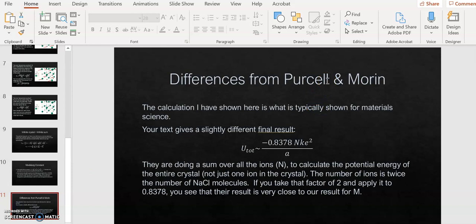Your textbook Purcell and Morin also does a derivation very similar to this, but the equation that they get is slightly different. The reason they get a slightly different equation is because they're not just calculating the potential energy for one ion. They're trying to calculate the potential energy for the entire lattice of ions, which is going to be a much different number. What they show in the text is that the total potential energy is minus 0.8378 times NKE squared over A. Here N would be the total number of ions in the lattice, so you can see that that's different. If you think about it, the total number of ions is twice the number of sodium chloride molecules. So if you take that factor of 2 and multiply it times your 0.8378, then you see that their result is pretty close for that constant to our value.